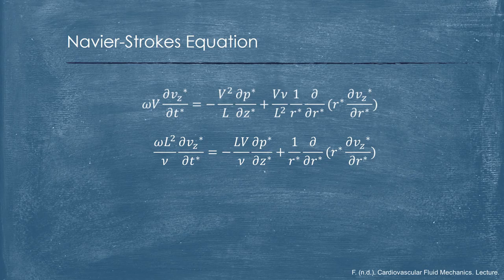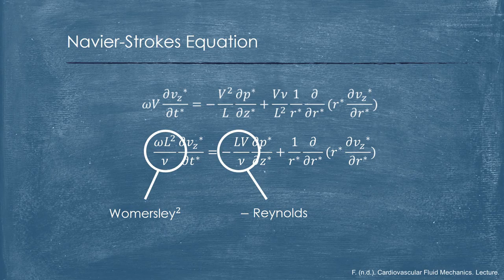And the left-hand side is indeed the square of the Womersley number, and the right-hand side will have the Reynolds number.